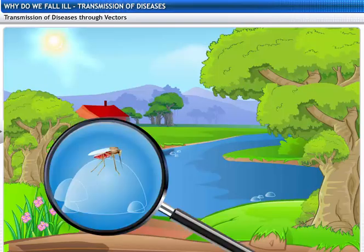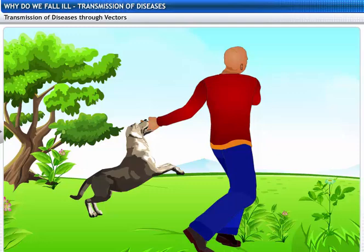These mosquitoes feed on warm-blooded animals like human beings. Animals like dogs and cats transfer the rabies virus when they bite human beings.